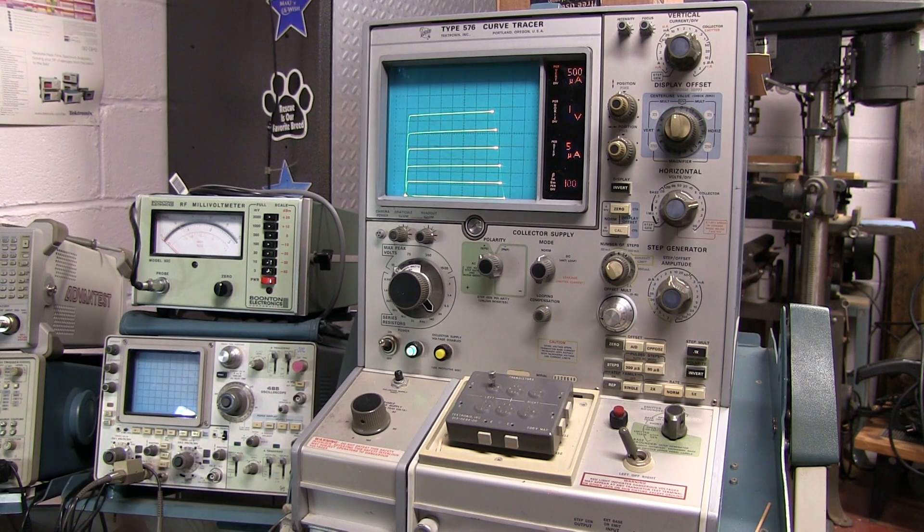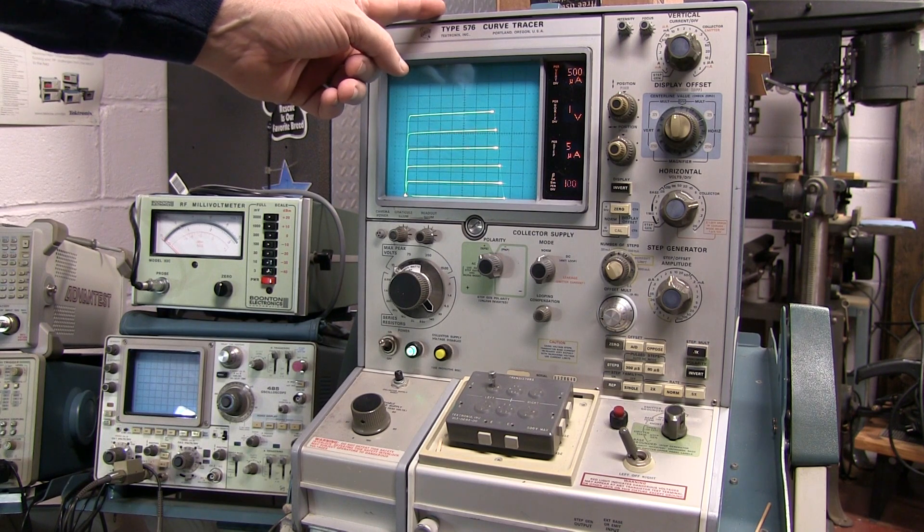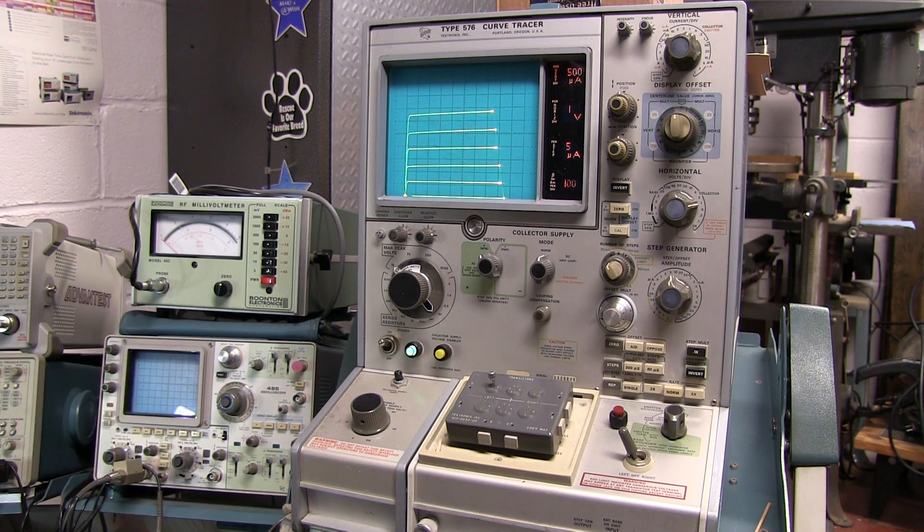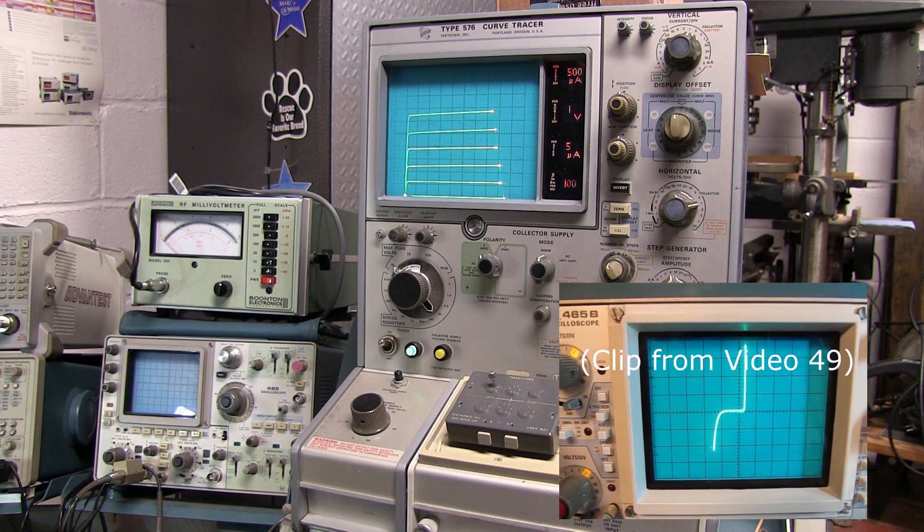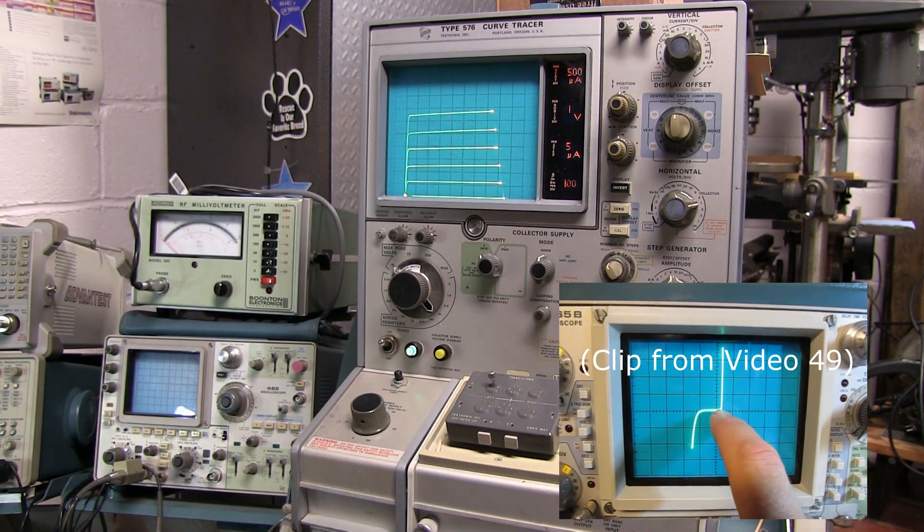One of the comments that I got asked recently was, is there a way to use a curve tracer like this to do the job that a Huntron tracker or even a simple octopus curve tracer can do? If you're curious about what I mean by an octopus curve tracer, take a look at my video number 49, and I will link that down in the video description below.